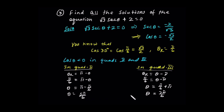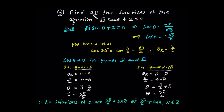Complete revolutions of theta have the same trigonometric value — these are co-terminal angles. Therefore, all solutions are: theta equals 7 pi over 6 plus 2n pi, or theta equals 5 pi over 6 plus 2n pi, where n is an element of Z. These are all the solutions of the equation 3 sec theta plus 2 equals 0.